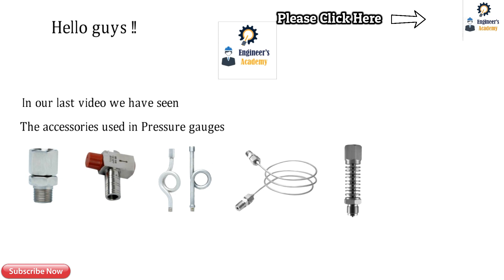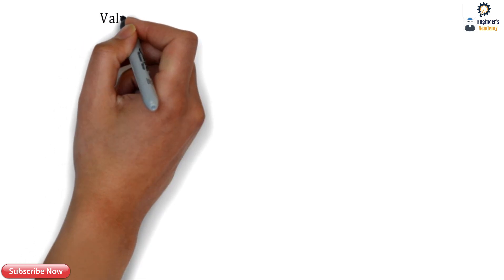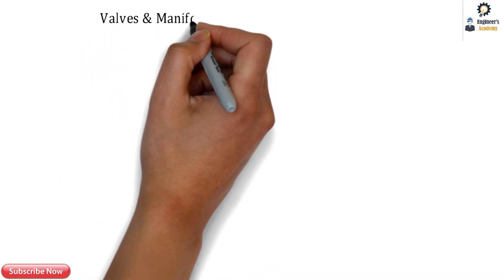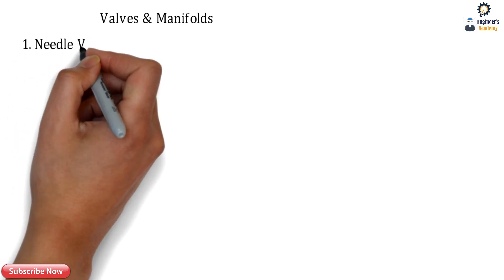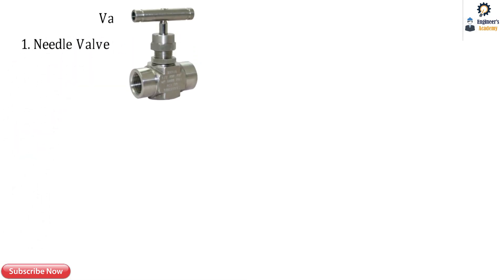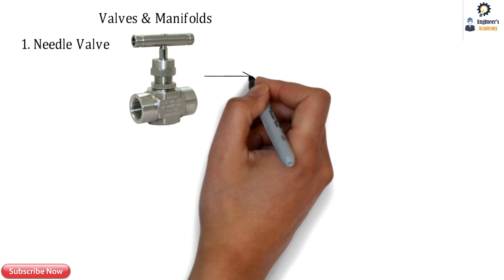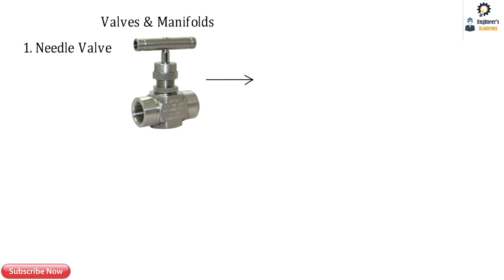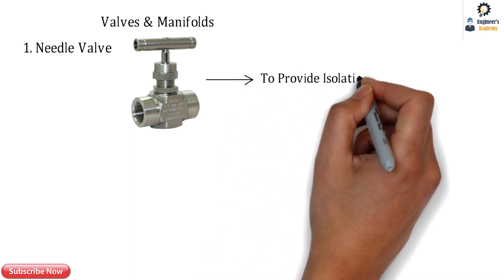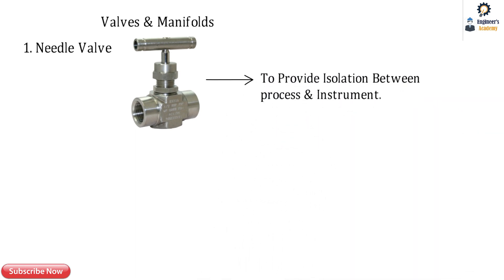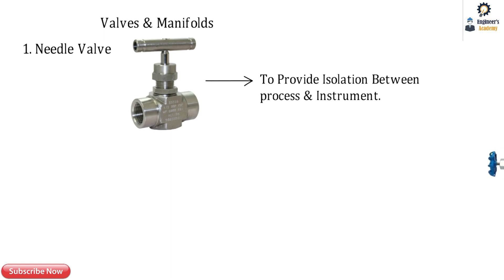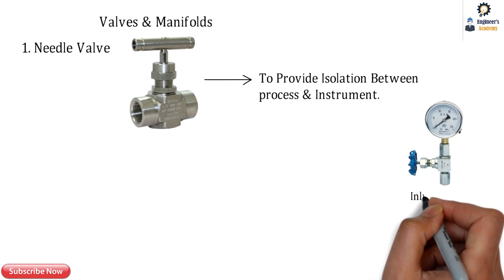Today's topic is the types of valves and manifolds used in the field of instrumentation, specifically those used along with pressure gauges and pressure transmitters. The first one is the needle valve, which is very commonly used in instrumentation and process lines. The basic function of the needle valve is to provide isolation between the process and the instrument. Here, a pressure gauge is mounted on the needle valve with an inline connection.